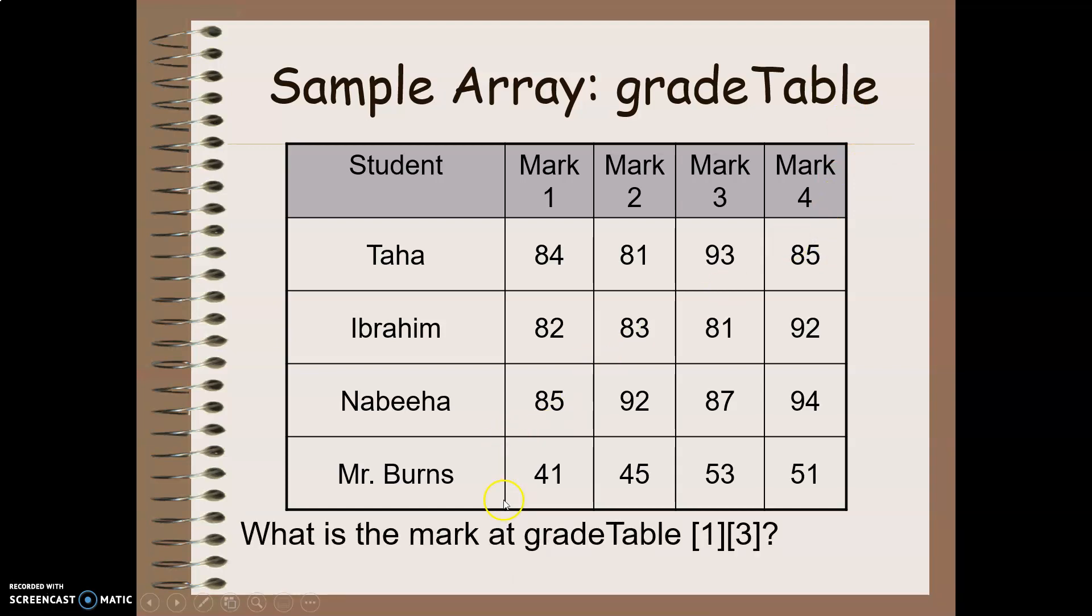So, if I was trying to figure out the mark at gradeTable[1][3], I'm going to look at the row first. So this is row zero, this is row one, and now I want to look at column three. Zero, one, two, three. So I'm going to end up with the value of 92.